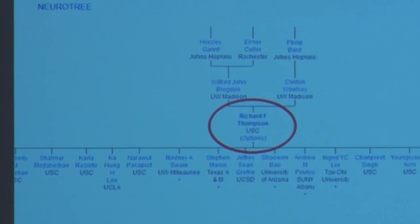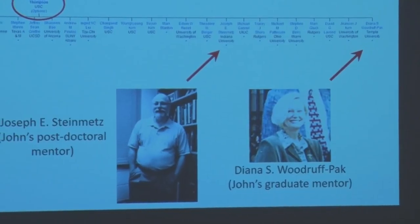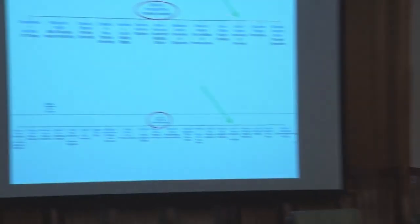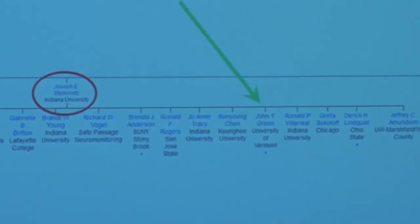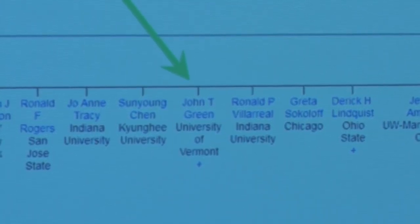His academic tree includes many well-known scientists he had a hand in training — Steve Marring, Jensak Kim, and many others. Two scientists he trained were also my mentors. Joe Steinmetz was a postdoc with Dick Thompson in the late 1980s and was my postdoctoral mentor at Indiana University. Diana Woodruff-Pack, my graduate mentor, was a visiting scientist in the mid-1980s in Dick Thompson's lab. So I am essentially Dick Thompson's academic grandchild.